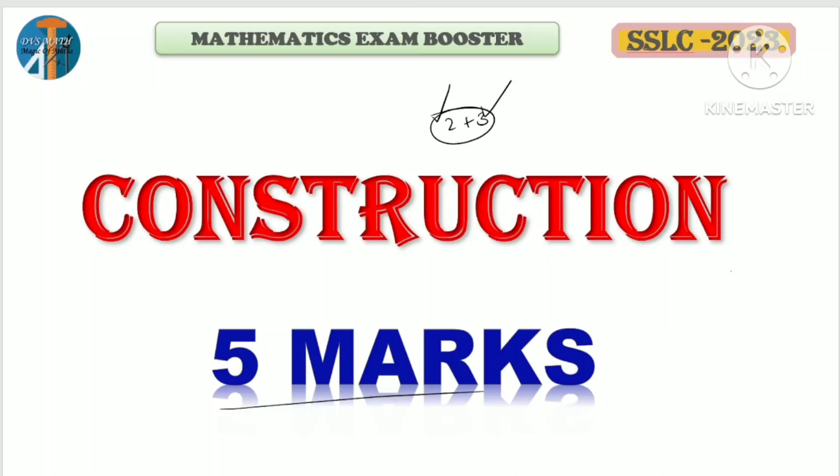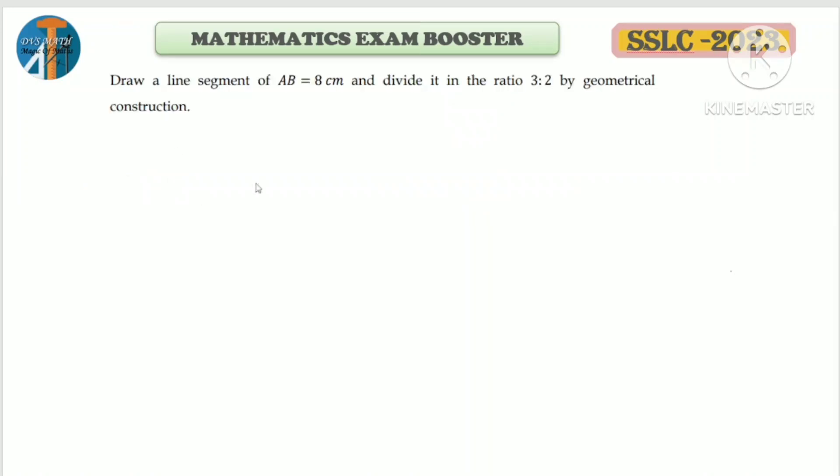Starting with the first question: Draw a line segment AB equal to 8 centimeters and divide it in the ratio 3:2 by geometrical construction. This has chances of appearing for two marks. First, take AB as 8 cm using your scale and mark it.